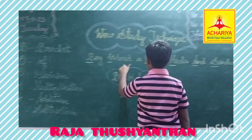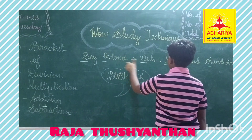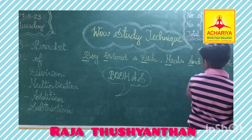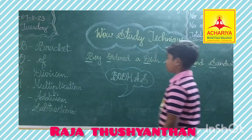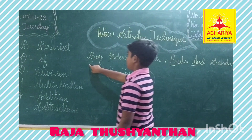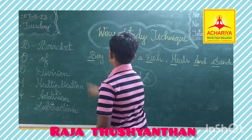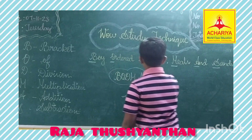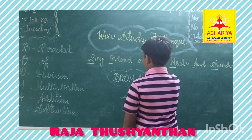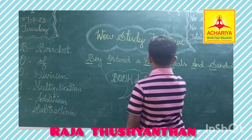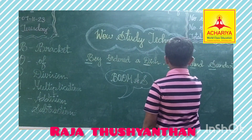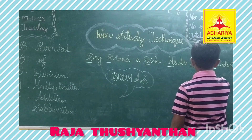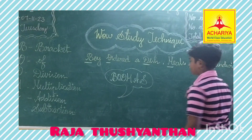My order is BODMAS. B for Bracket, O for Off, D for Division, M for Multiplication, A for Addition, S for Subtraction.